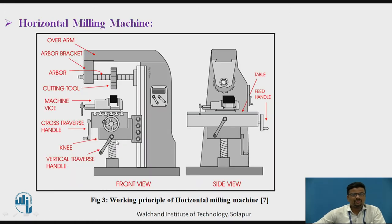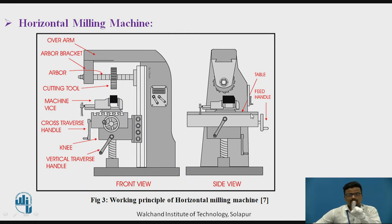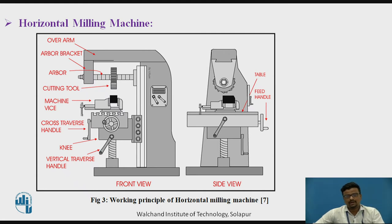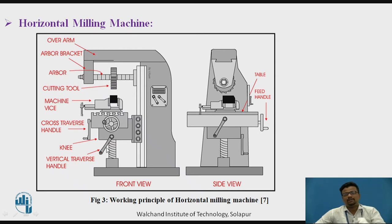This is the horizontal milling machine, which consists of different components like the work table. To provide movement for the work table, there is a feed handle. If you want to provide horizontal direction movement, you can use the feed handle. If you want to provide vertical movement for the work table, you can use the knee, and there is a handle with the help of which you can provide vertical movement for the work table or the work piece.